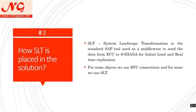SLT stands for System Landscape Transformation — it is a standard SAP tool used as middleware to send data from ECC to HANA or S/4HANA, supporting both initial load and real-time replication. For some objects we use RFC and for some we use SLT. SLT is a transformation tool where you can apply rules, filters, and transformations between ECC and S/4. It is also used for transformation when non-SAP systems are in scope on the source side — it is a must-have tool for any CFin project.